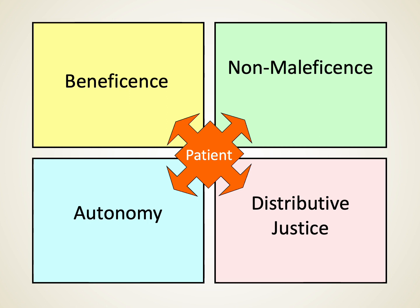So in practice, no matter what clinical scenario you face with a patient, these four principles ought to be automatically integrated in your thought process: What good am I doing for this patient? What harm am I doing? Have I weighed the risk and the benefit? Who makes the decision — is the patient informed enough to make that decision? And finally, are there any distributive justice issues around the use of that medicine?